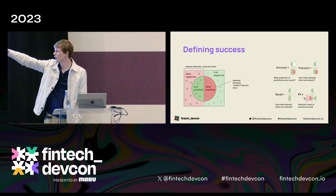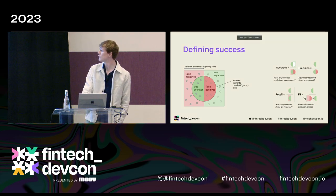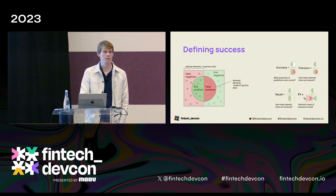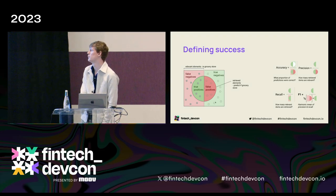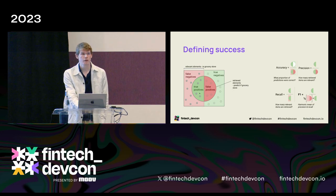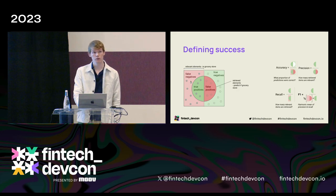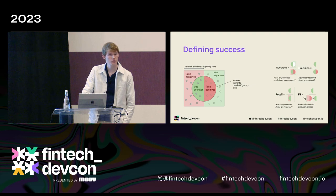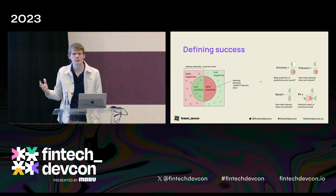Everything inside the circle is where we predicted. True positives — we said it was a grocery store and it was. False positives — we said it's a grocery store but it's not. False negatives — it is a grocery store but we said we don't know. True negatives — it wasn't a grocery store and we didn't think it was. Accuracy is the most commonly thought of: what proportion of predictions were correct? But say you have a test for a disease and 10 out of 20 people have it. If you only make predictions for two, saying one has it and one doesn't, and you're right — that's not good performance.